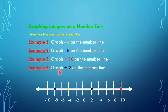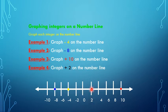Finally, I want to graph positive 2 on the number line. I go to the number line, find 2 or positive 2, and mark off the point.